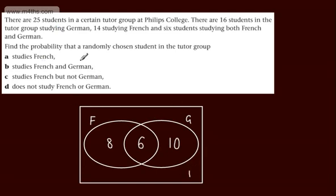So the probability of studying French, we know there are 14 French, so it's going to be 14 out of the 25 students.